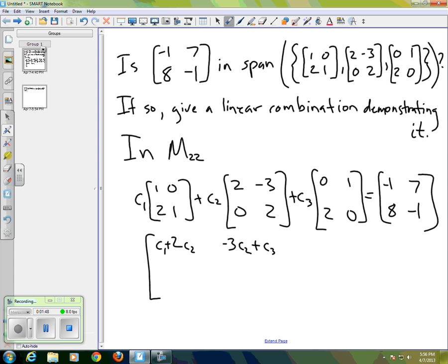And then in the 2,1 entry, second row, first column, we have 2C1 plus 2C3. And then in the second row, second column, we have C1 plus 2C2.